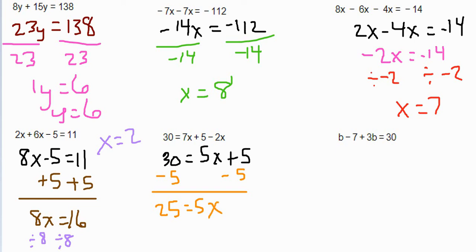5x, of course, means 5 times x. So the opposite is division. Divide both sides by 5. And that gives us x equals 5 as our answer.